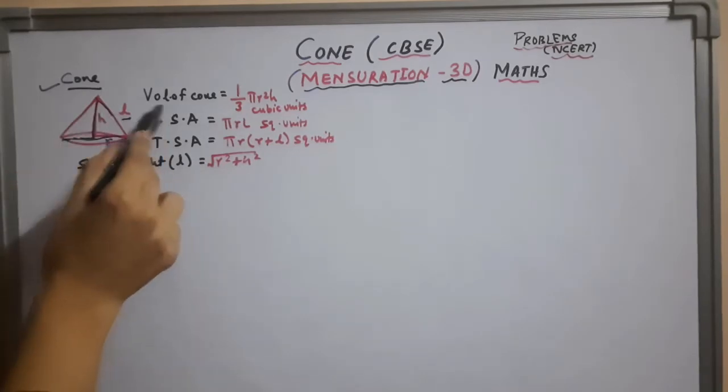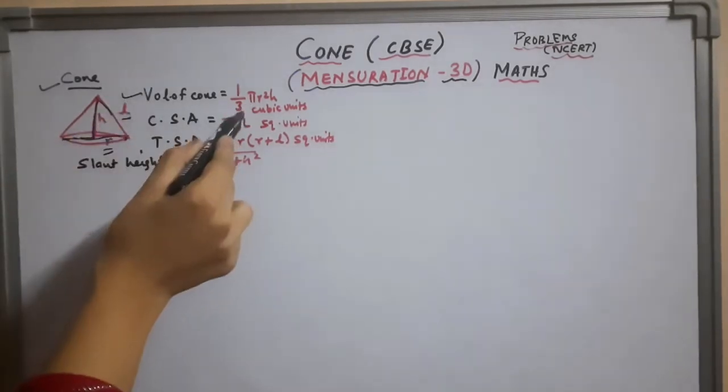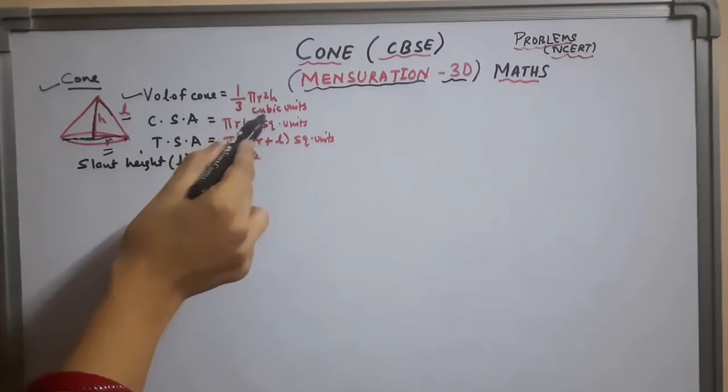Now if you have to take the volume of the cone, the formula is 1 by 3 pi r square h cubic units.